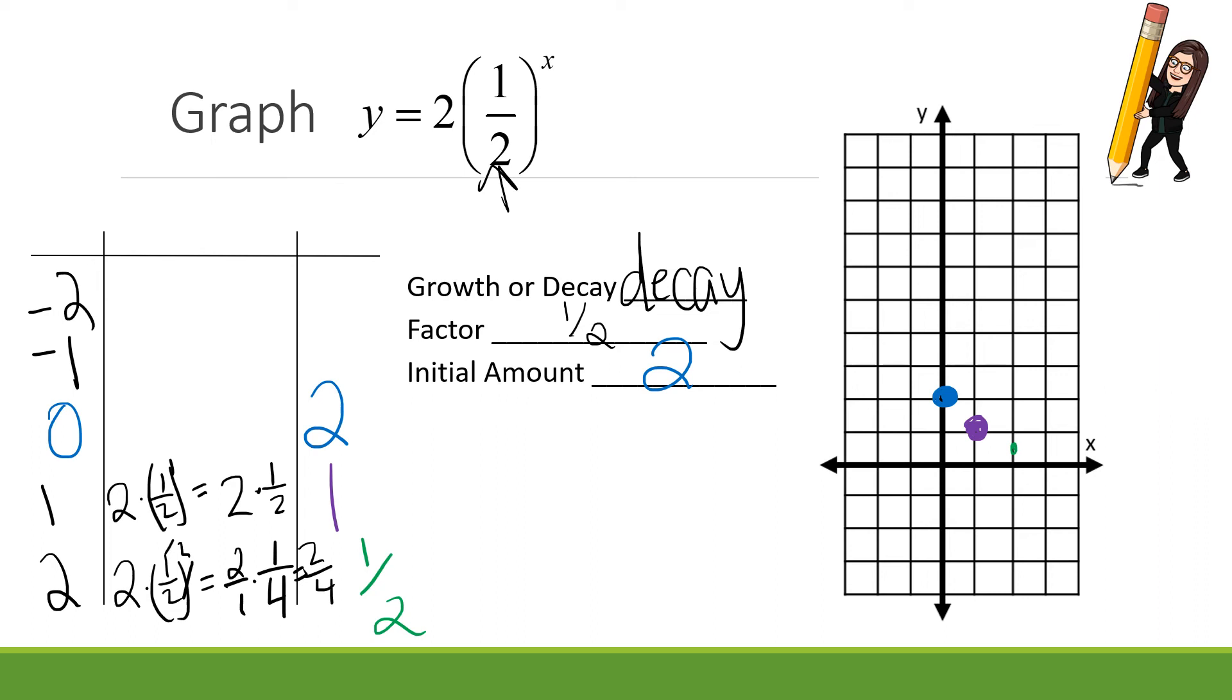All right. Let's go to negative 1. 2 times 1 half to the negative first. The negative flips my b value. So now I have 2 over 1 to the first. Well, that's just a 2, right? 2 to the first is 2. 2 times 2 is 4. Nice easy value. Negative 1, 4. And that makes sense with my graph.